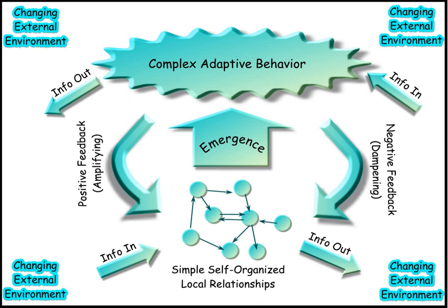In sociology, social complexity is a conceptual framework used in the analysis of society. Contemporary definitions of complexity in the sciences are found in relation to systems theory, in which a phenomenon under study has many parts and many possible arrangements of the relationships between those parts. What is complex and what is simple is relative and may change with time. Current usage of the term 'complexity' in the field of sociology typically refers specifically to theories of society as a complex adaptive system.